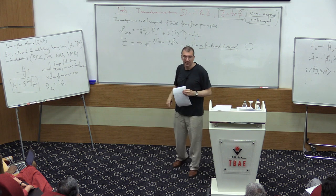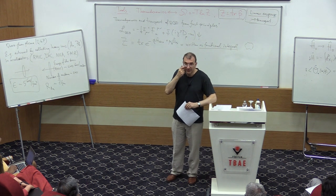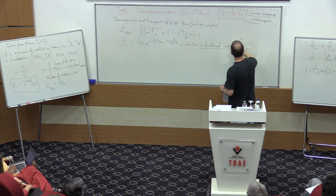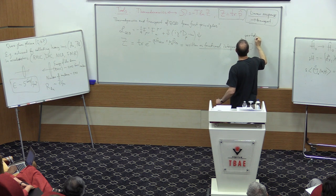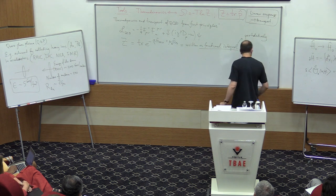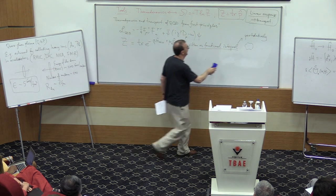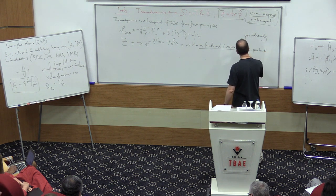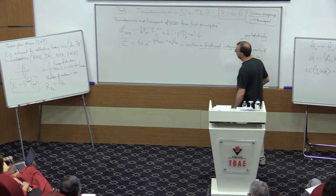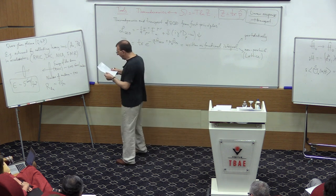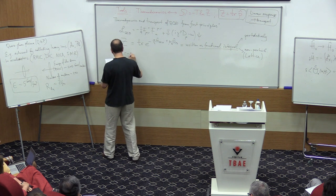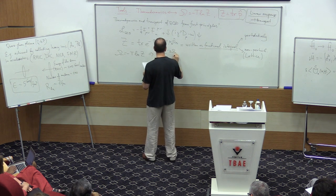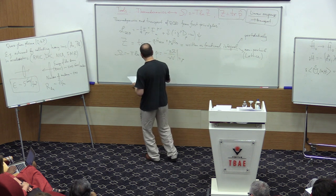The functional integral can be treated perturbatively if you have a small parameter, or non-perturbatively — which usually means on a lattice. Once you know Z, everything follows from the free energy: Ω = −T log Z. You can compute the pressure as P = −∂Ω/∂V at fixed T and μ, or you can compute entropy. These are the objects you want to know: pressure and entropy.